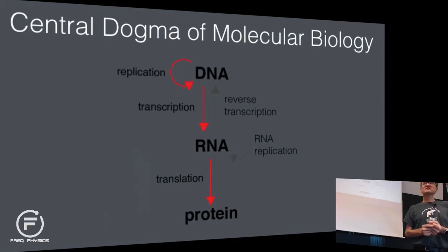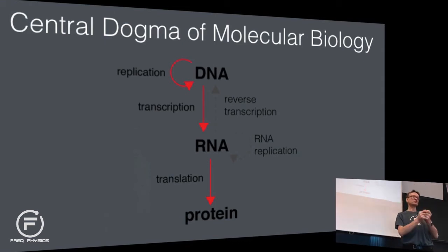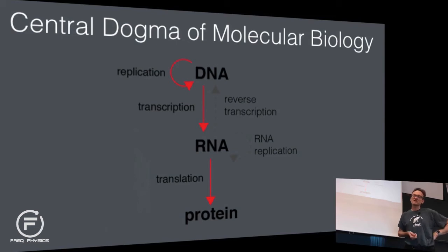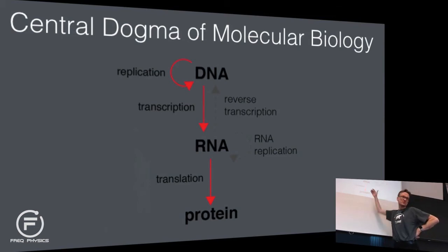The sequence is what you have encoded in your genome — in the DNA. That's pure sequence information: A, G, C, and T. This is converted through RNA to protein structure.